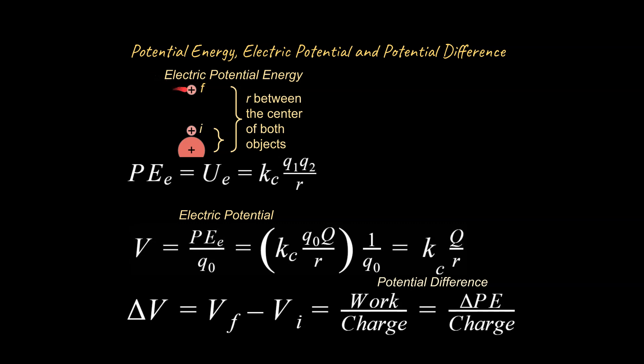So the work per unit charge would be less at this location. Now the difference between this initial position and the final position in terms of their electric potential is called potential difference. This is the hardest concept to truly understand in all of high school physics, I'm convinced.